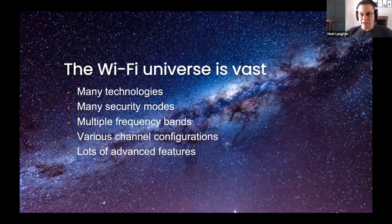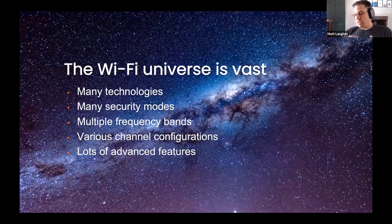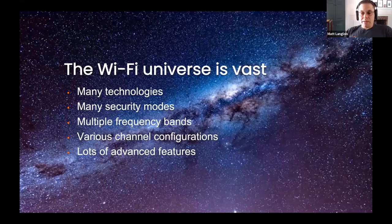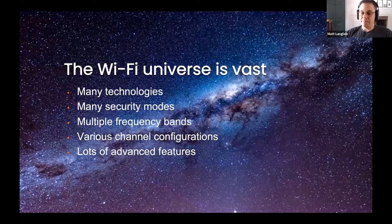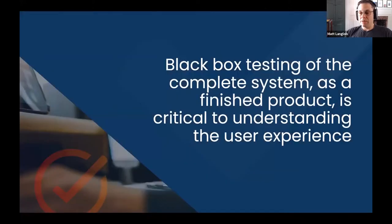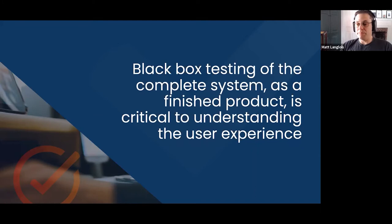The other big challenge with Wi-Fi is what I'll call the Wi-Fi universe — it's massive. There are so many different security modes and technologies to deal with: six technologies in fact, many different security modes, different frequency bands, different channel configurations, regulatory issues in different parts of the world, and advanced features like band steering and MU-MIMO. It's hard to predict exactly what you'll encounter or how a consumer will configure a device with all of these things in the mix. The key point is to make sure you test a router as a complete system — black box testing as a finished product — to understand the end user experience.